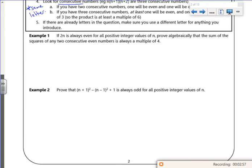So if 2n is always even for all positive integer values of n, prove algebraically that the sum of squares of any two consecutive even numbers is a multiple of four. Sum of squares of any two consecutive even numbers. Right, so let's define something here. So I'm at two consecutive even numbers. I'm going to do 2n, and it'll be 2n plus two. So if n was one, it gives you two and it gives you four.